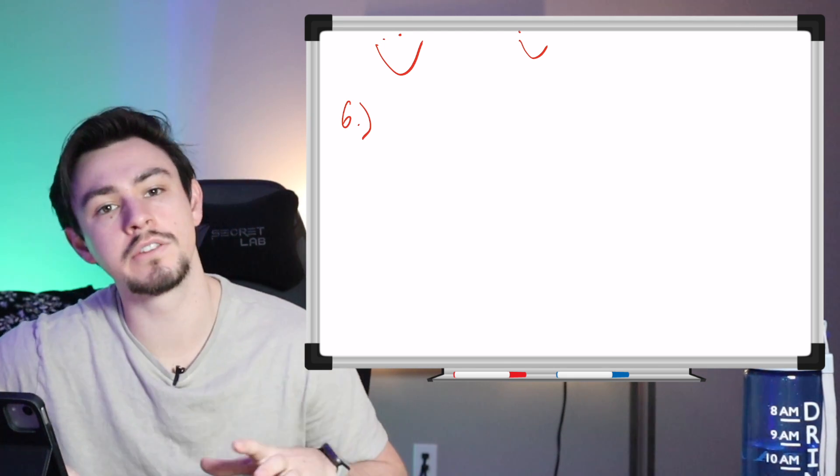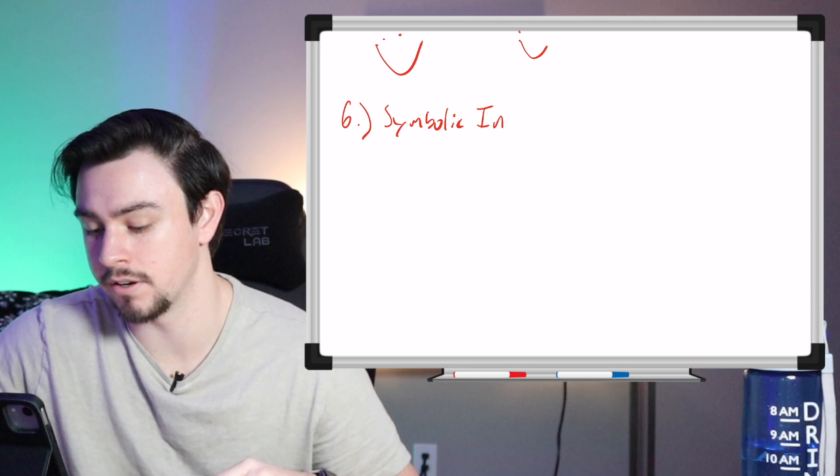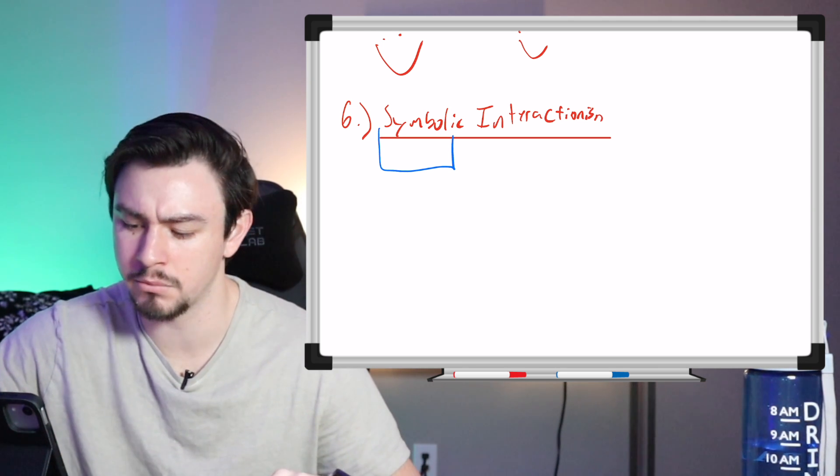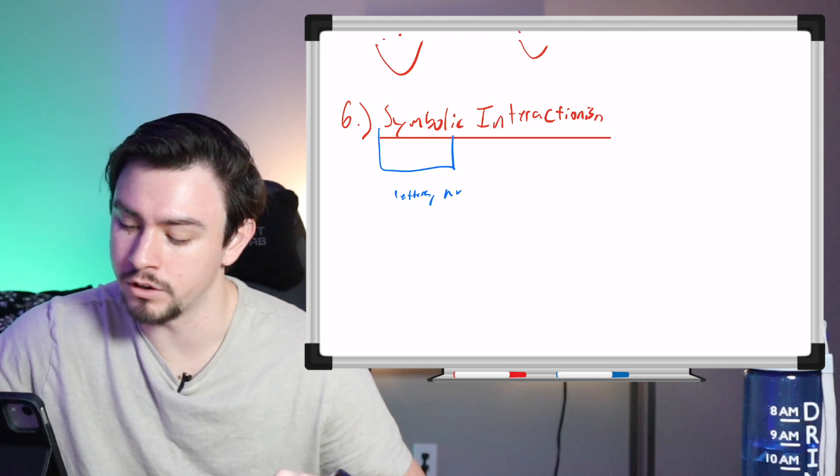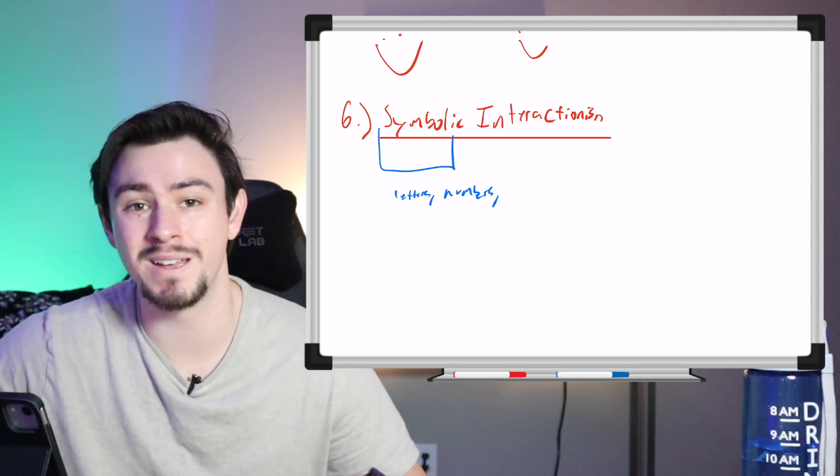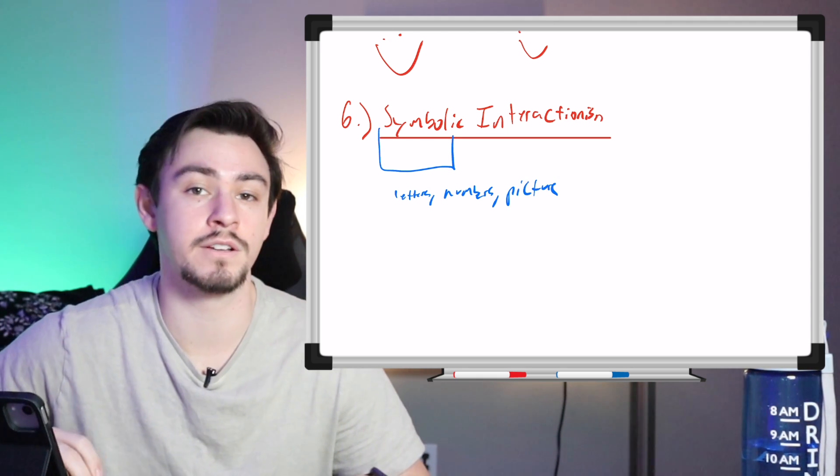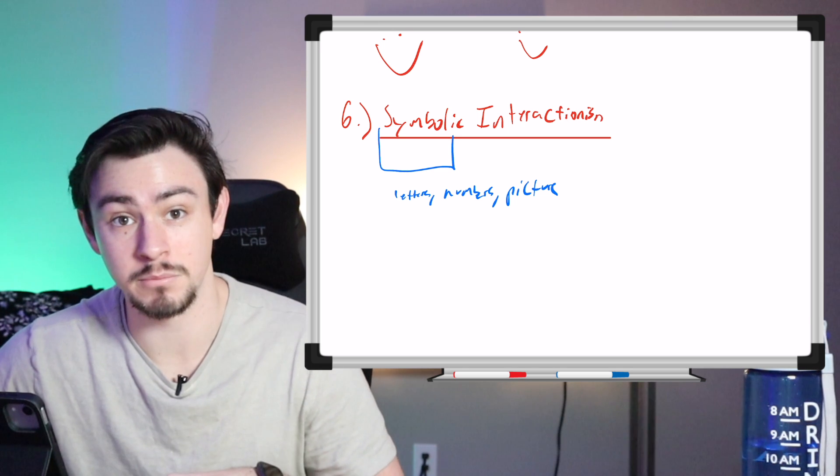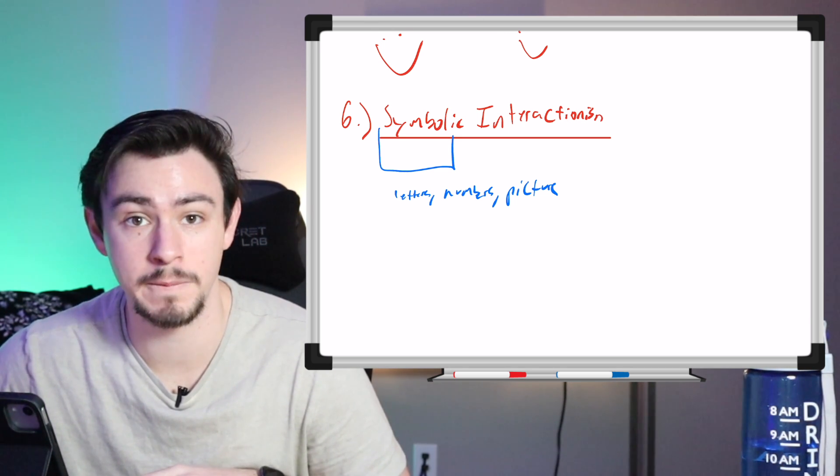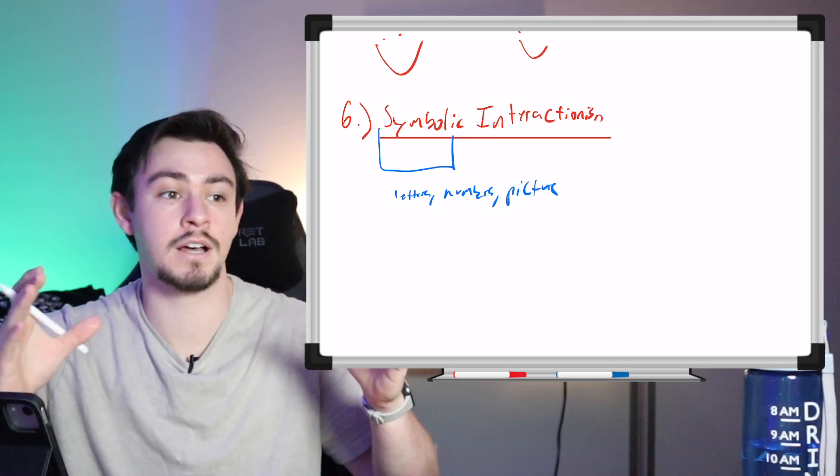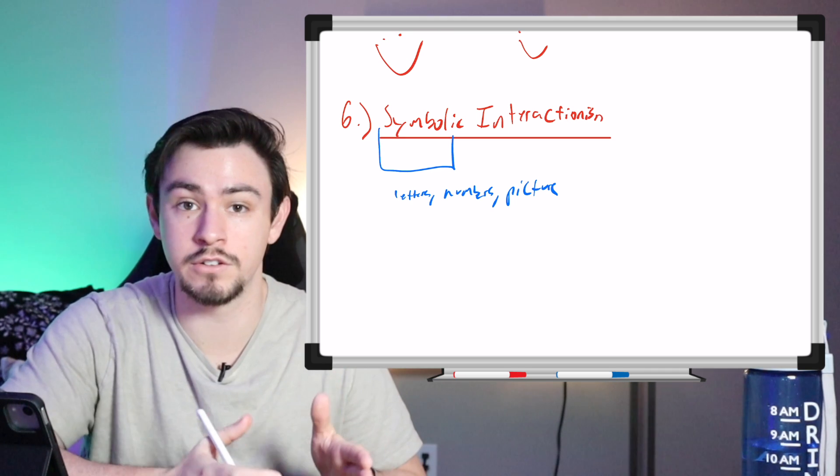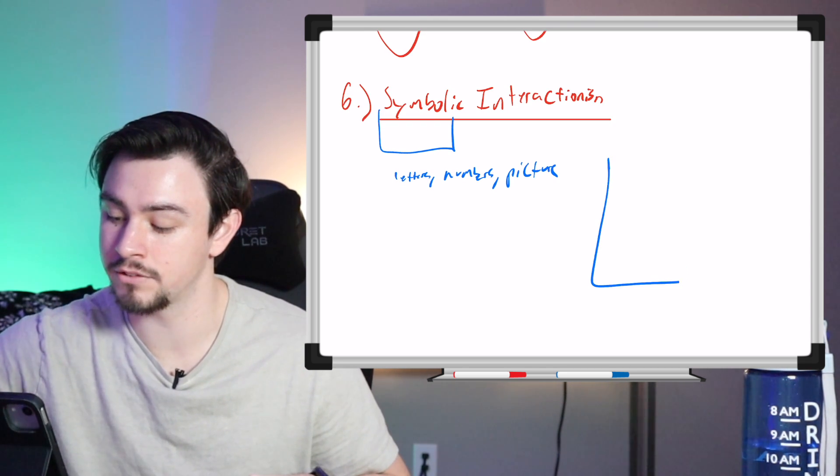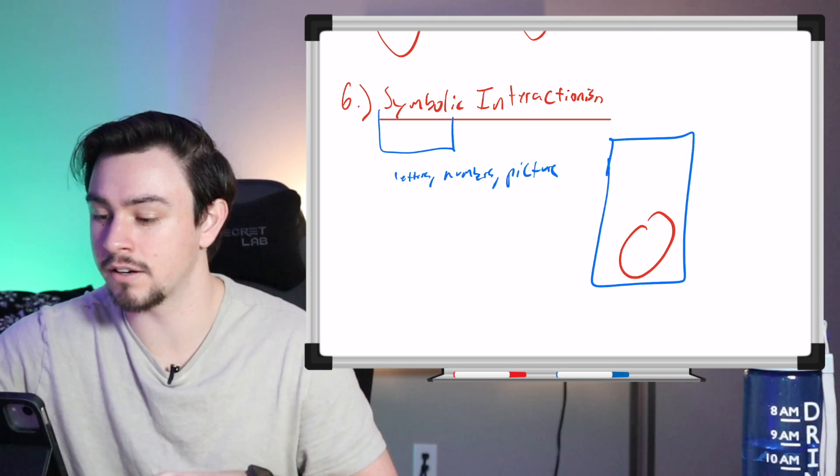Now, symbolic interactionism, this is one that you might get tripped up with the social constructionism theory. Now, when you're focusing on this one, I just want you to remember it by the word symbols. They're going to have to give you symbols. And they may not say the word symbols, but they'll give you something like letters or numbers, or maybe one specific sound or maybe a type of picture. Now, the reason that this one could be confusing is that the actual definition of symbolic interactionism is this idea that your experiences give meaning to symbols. Now, it kind of sounds a little bit like social constructionism, right? To help you remember it, try to think about the debate between biological sex and gender. People say that gender is a social construct. People don't say that gender is a symbol, right? So what would be a good example of a symbol?